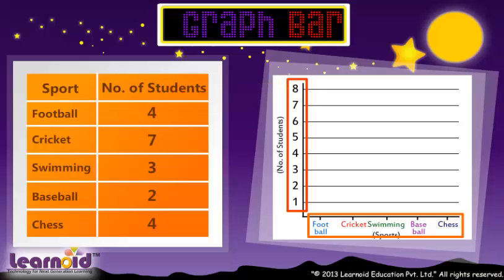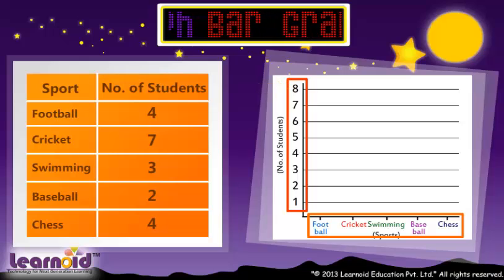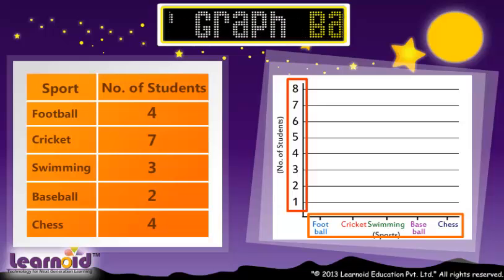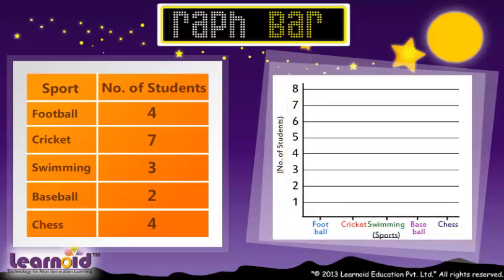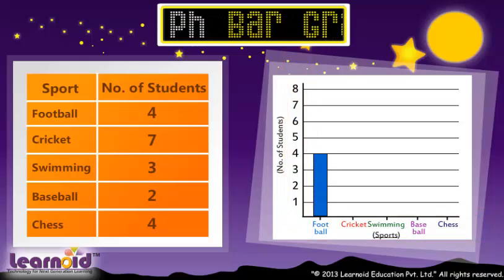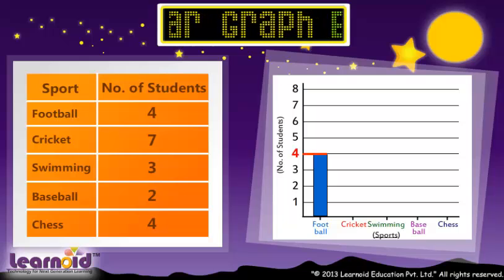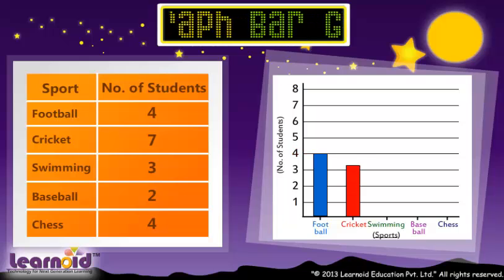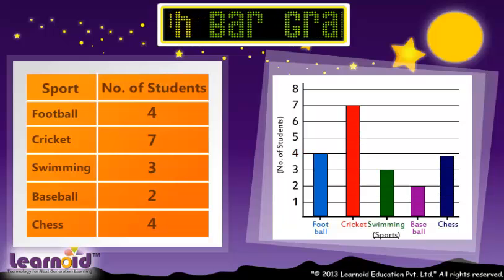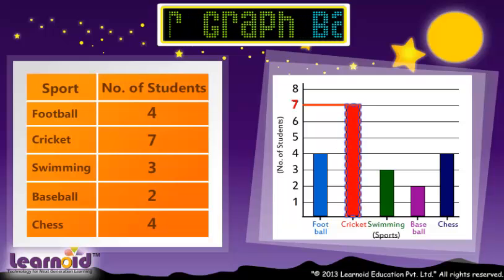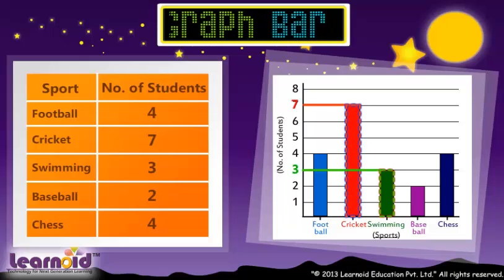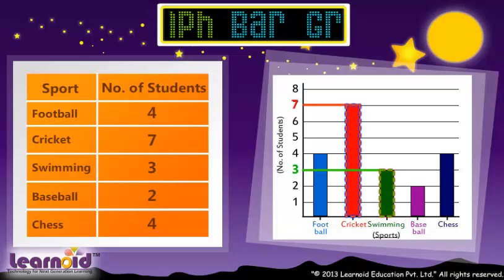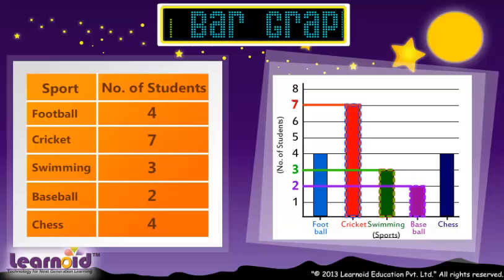Now we will draw a bar on each sport's name up to the number of students. For football, we draw the bar up to 4. Similarly, draw bars for Cricket, Swimming, Baseball and Chess.